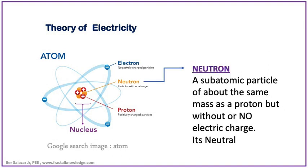Another part of the nucleus is called a neutron. It is a subatomic particle of about the same mass as the proton but without an electric charge. We called it neutral particles.